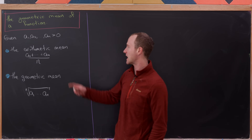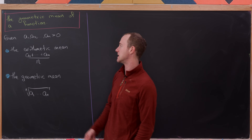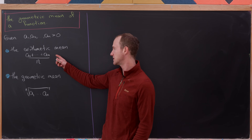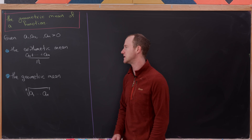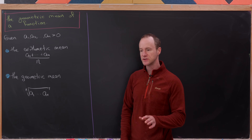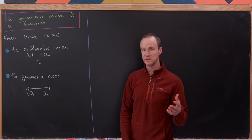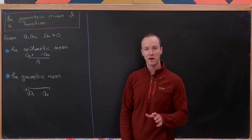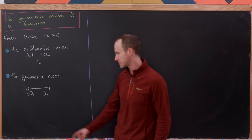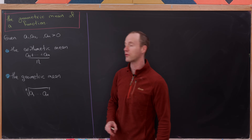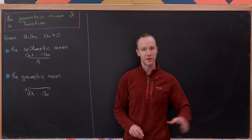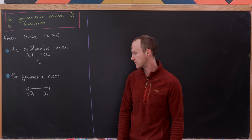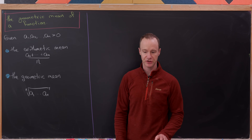The arithmetic mean of positive real numbers a1 through an is simply their sum divided by n — in other words, the sum divided by how many numbers you have. The geometric mean is the nth root of their product, that is, their product raised to the 1/n power.